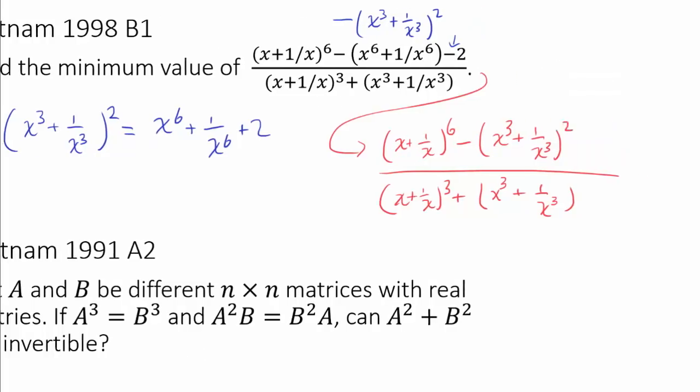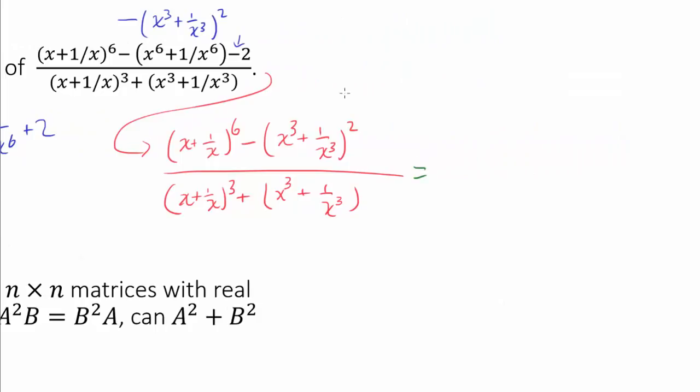And now the only trick is to notice that the top is actually difference of squares. This is difference of squares. Because we have x plus 1 over x cubed squared minus this expression squared. So we know the top can be factored as x plus 1 over x cubed minus x cubed plus 1 over x cubed times x plus 1 over x cubed plus x cubed plus 1 over x cubed.